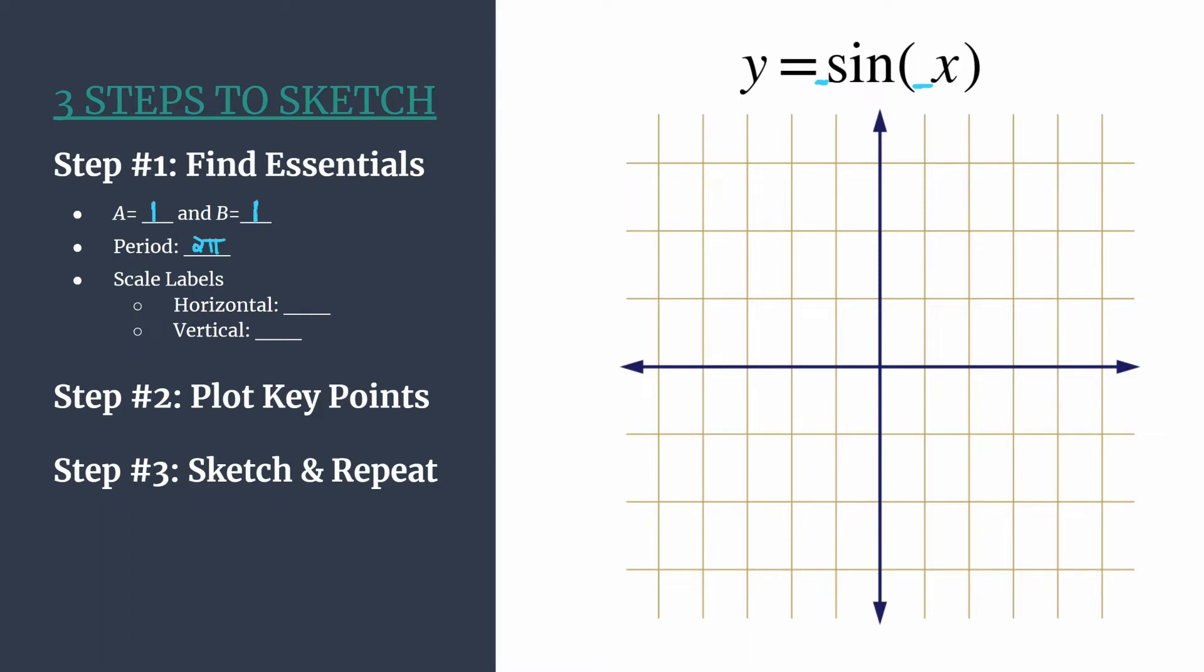Now we can move on to finding good scale labels so that we can label our axes. To find our horizontal scale labels, remember you take the period and you divide by four. So that's two pi over four. We know that can reduce because we have a common factor of two, so it reduces to one in the numerator and two in the denominator. We should be counting by pi over two to label our horizontal tick marks. To set a vertical scale we usually can just look to a, so we'll label our vertical tick marks by ones.